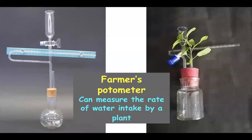Just like Ganong's potometer, we have a Farmer's potometer. This also measures the rate of water intake by a plant, but here there is no bent tubing. We have a container having water.